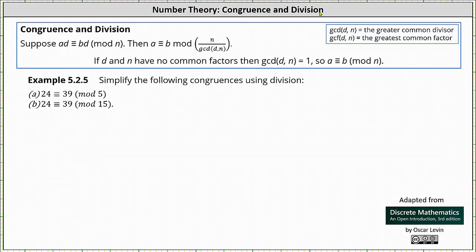Welcome to a lesson on congruence and division. Suppose AD is congruent to BD mod N. Then A is congruent to B mod N divided by the greatest common divisor of D and N, which indicates we can simplify a congruence.